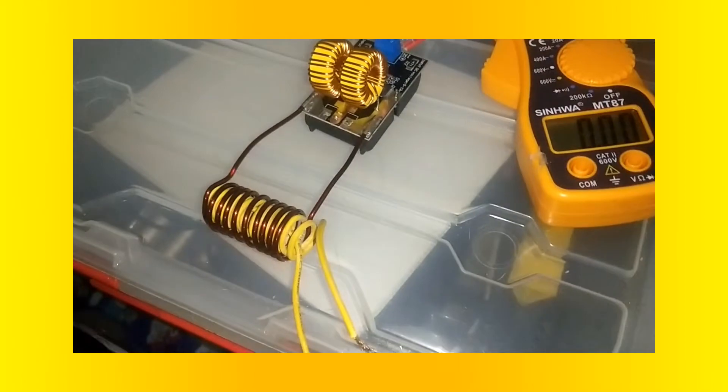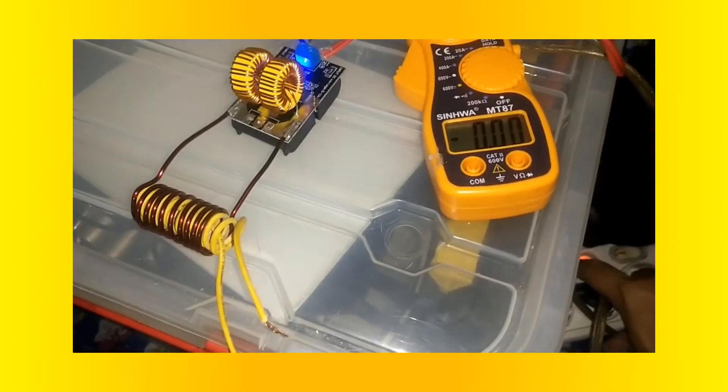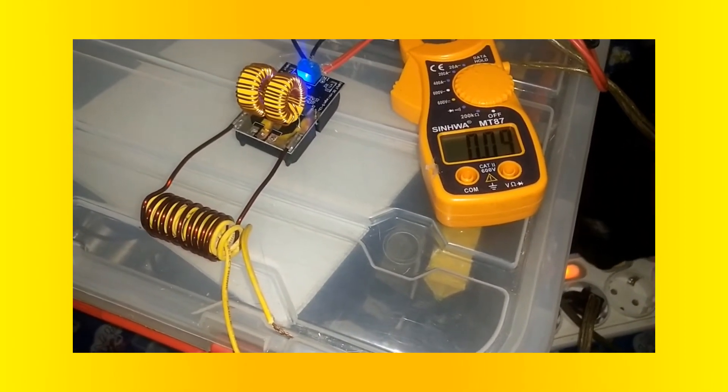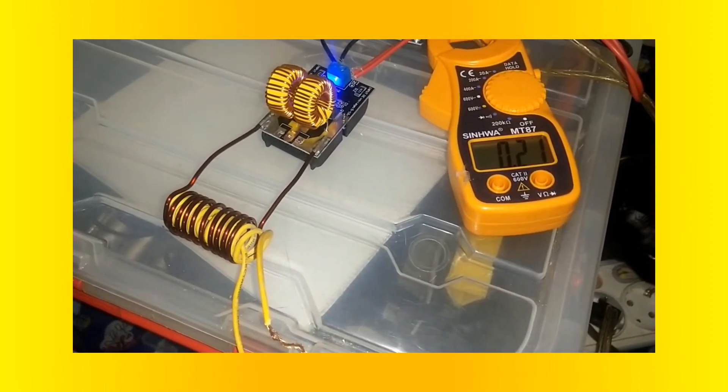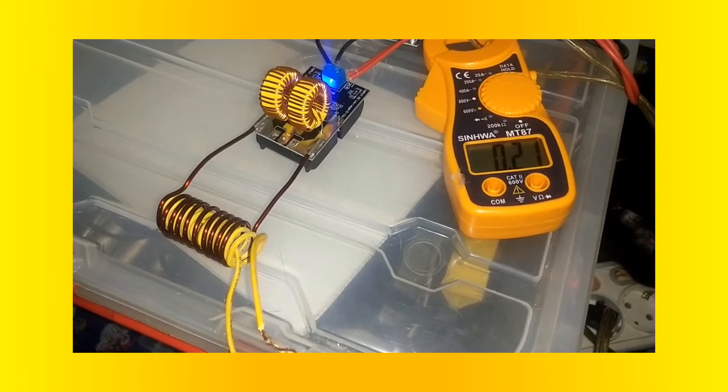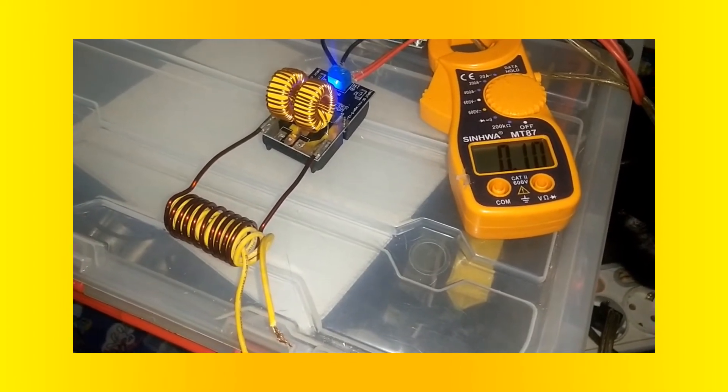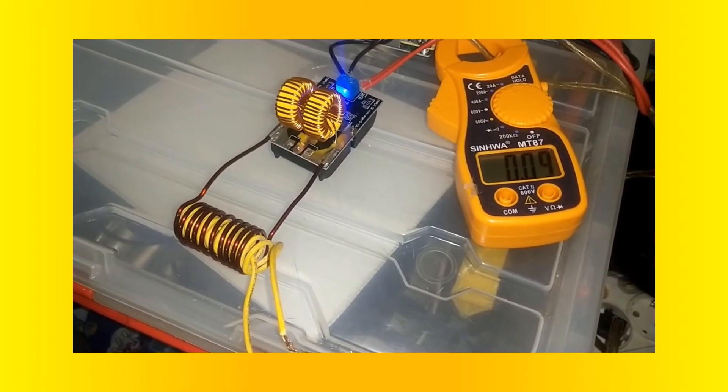Now the ferrite rod has been removed, leaving the secondary coil with air core. The current is 0.09 ampere. When the ends of the cable are connected, the current is up to 0.22 ampere. The copper wire doesn't seem to get as hot as before.